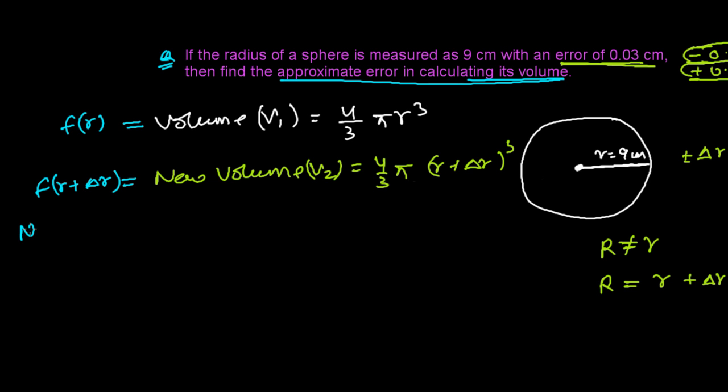To find out the approximate error, we need to use the formula: f(r + Δr) - f(r) = f'(r) × Δr, where f'(r) is the derivative of f(r).